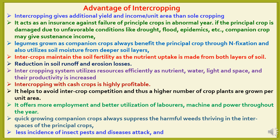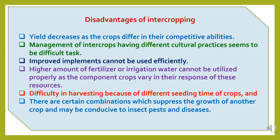Intercropping helps to avoid intercrop competition, and thus a higher number of crop plants are grown per unit area. It offers more employment and better utilization of labor, machines, and power throughout the year. Quick-growing companion crops suppress harmful weeds thriving in the interfaces of the principal crops. There will be less incidence of insect pests and disease attack in intercropping by growing different kinds of crops.